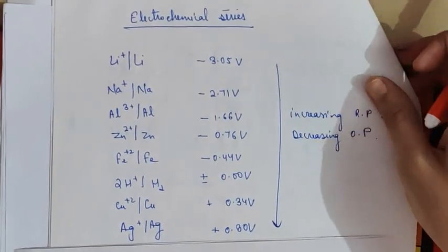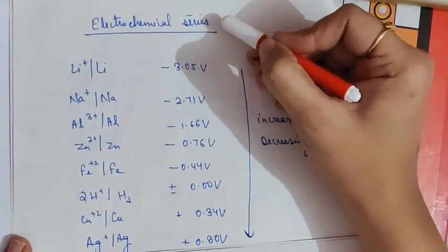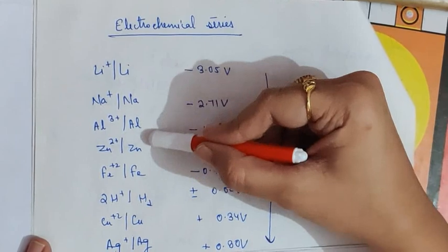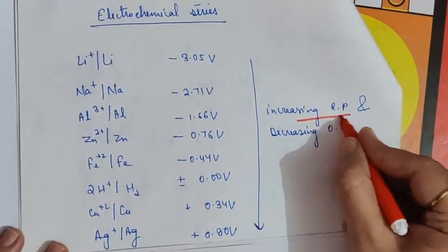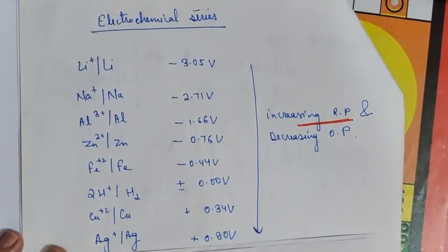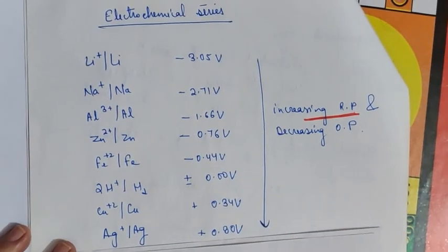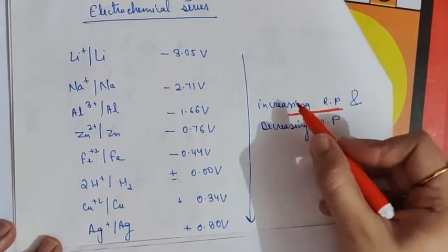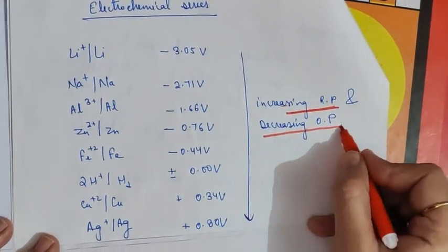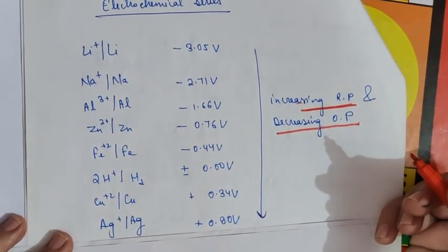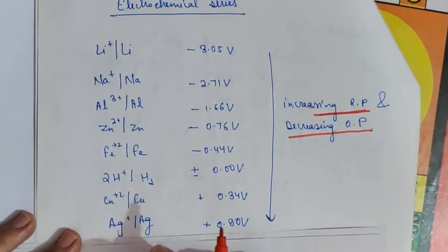So what is the electrochemical series? It is a series in which the metals are arranged in increasing order of their reduction potential, or equivalently, in decreasing order of their oxidation potential.